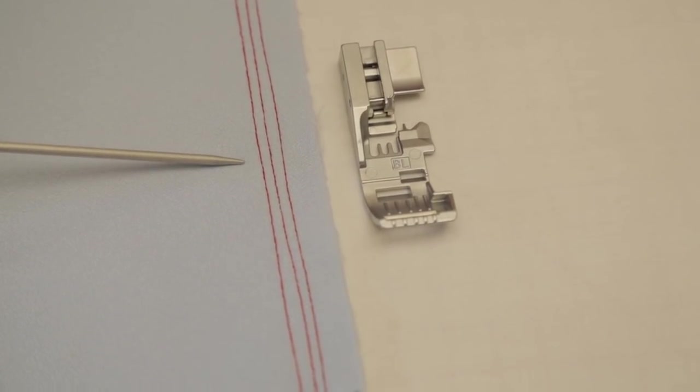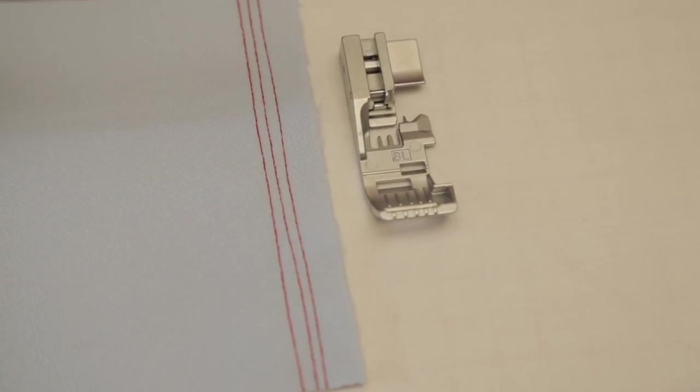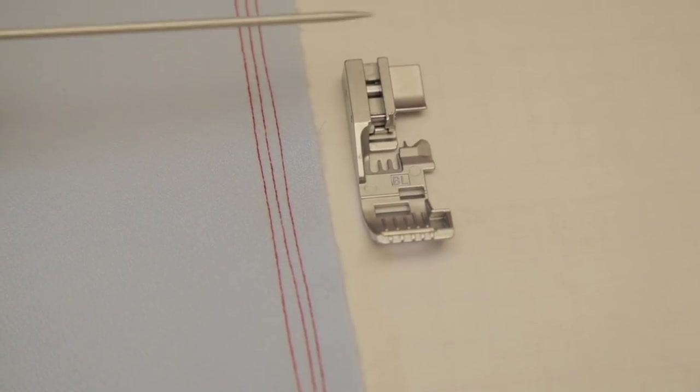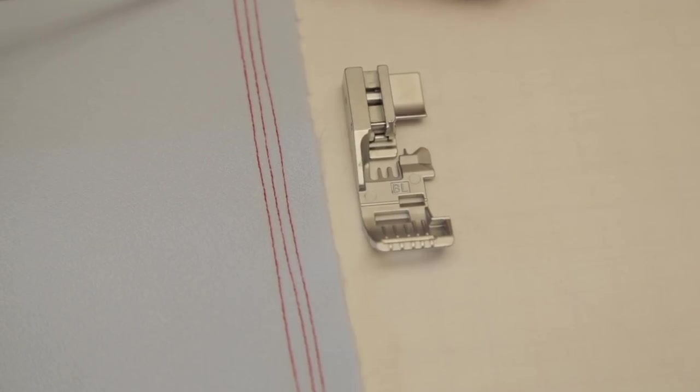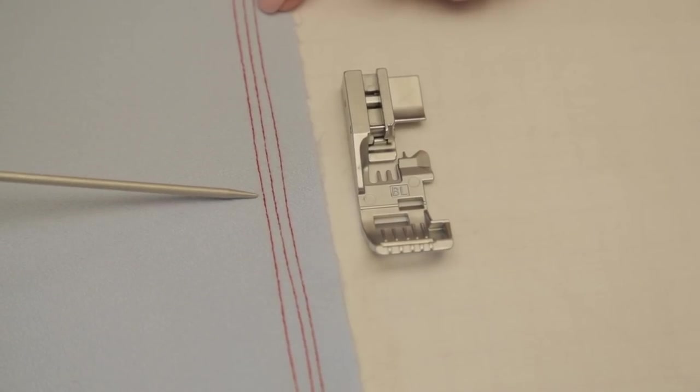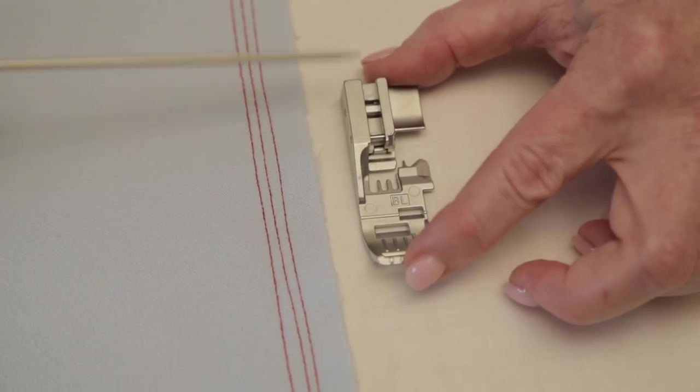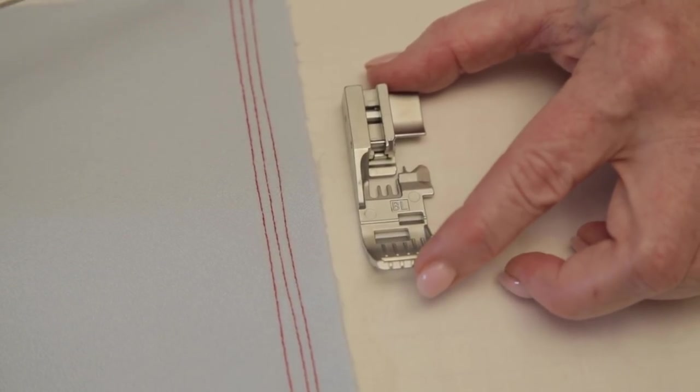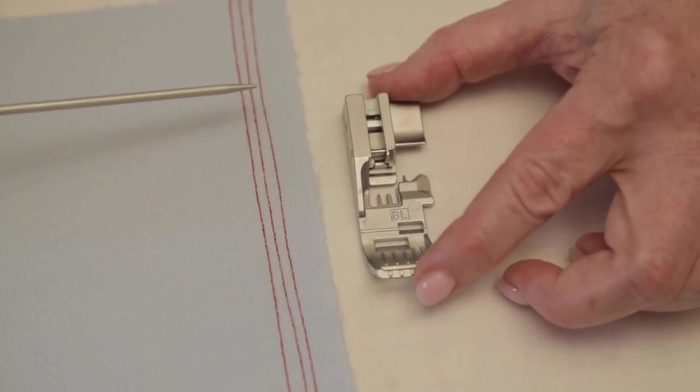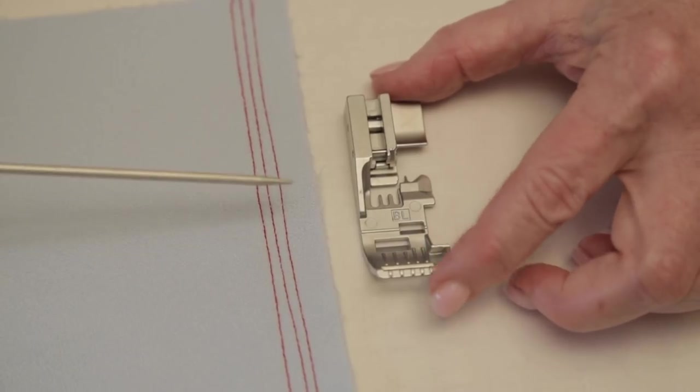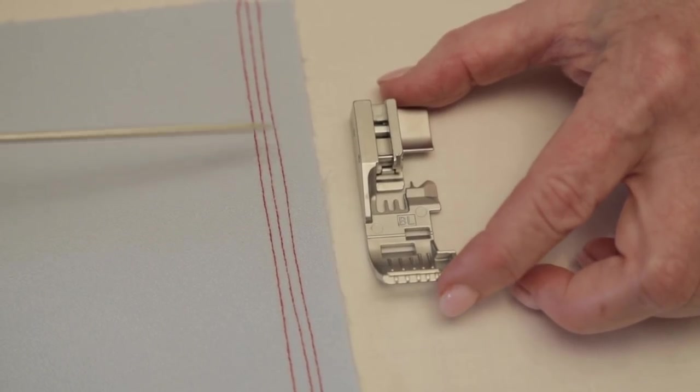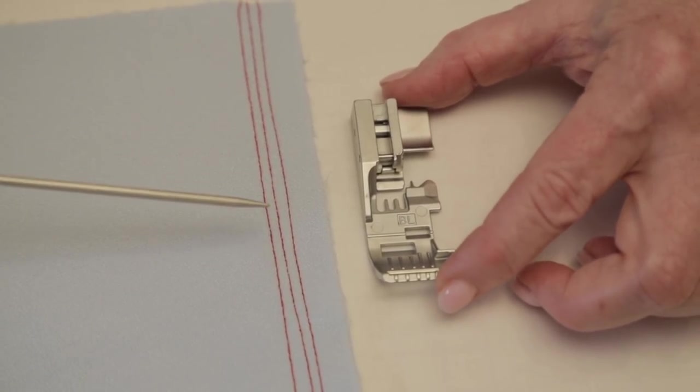Now I'm working on a Baby Lock Triumph and using the standard foot when I'm talking about this. I just want to make that clear. And you can check your machines and check your feet for landmarks on it. And you also might want to check your owner's manual. It may have this information in it. But let me tell you how you can gauge the seam allowance on these.